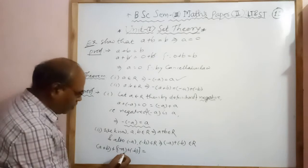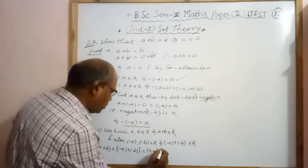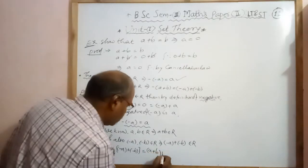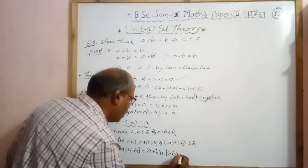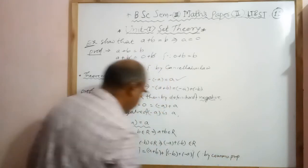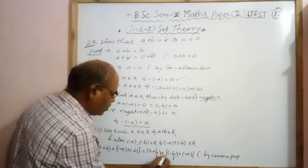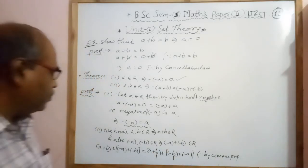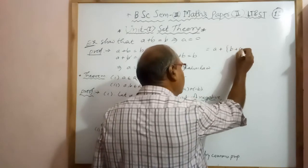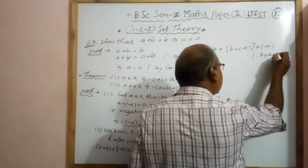By commutative property, we interchange minus A plus minus B to write it as minus B plus minus A. Then by associative property, we associate minus B and B together, giving A plus B plus minus B plus minus A, which equals A plus 0 plus minus A by the negative property, since minus B is the negative of B and their addition gives 0.